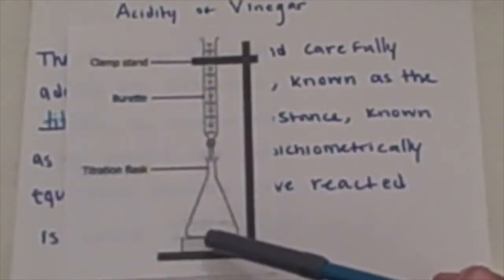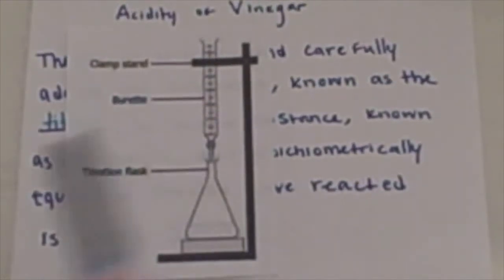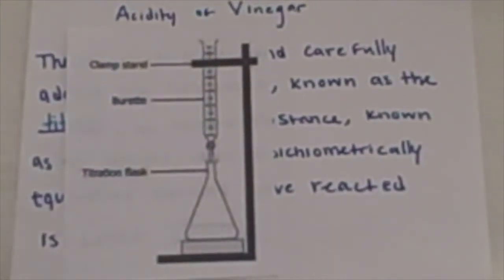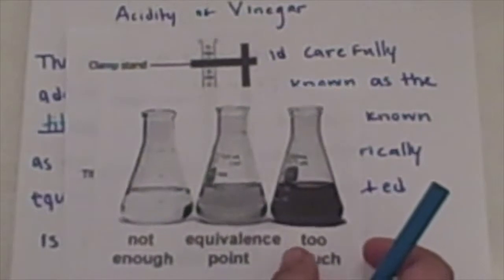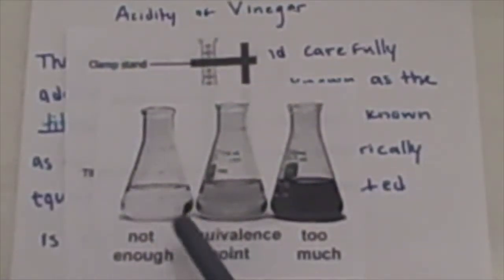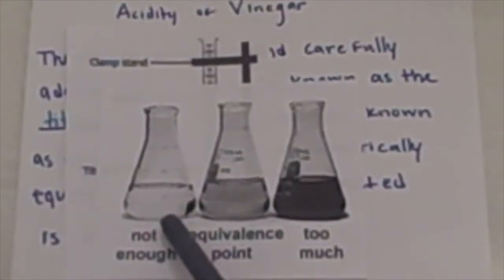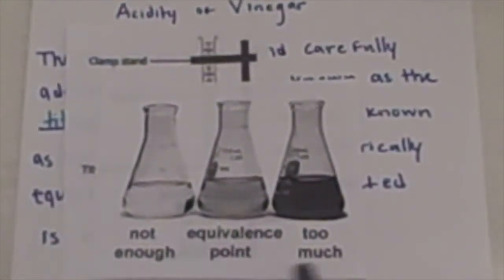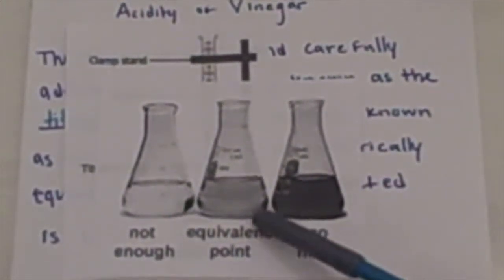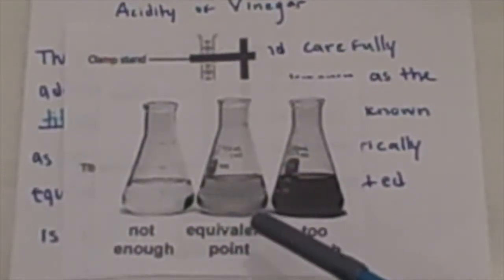The titrant is added to the sample until an indicator changes the color. So here's what it looks like. This is when you're adding the titrant. There's no color change here. But then once you reach the equivalence point, you see it getting pink. So it should be a light color. That's when you stop.